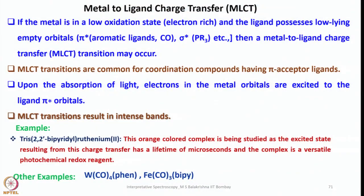First, let us look into metal to ligand charge transfer. If the metals are in a low oxidation state, you should remember that they are electron rich. And if the ligands coordinated to the metal possess low-lying empty orbitals — having pi-star aromatic ligands, carbon monoxide, cyanide, or olefins, and also sigma-star in case of phosphines, or sometimes sigma-star of hydrogen molecule — then a metal to ligand charge transfer, MLCT, would occur.